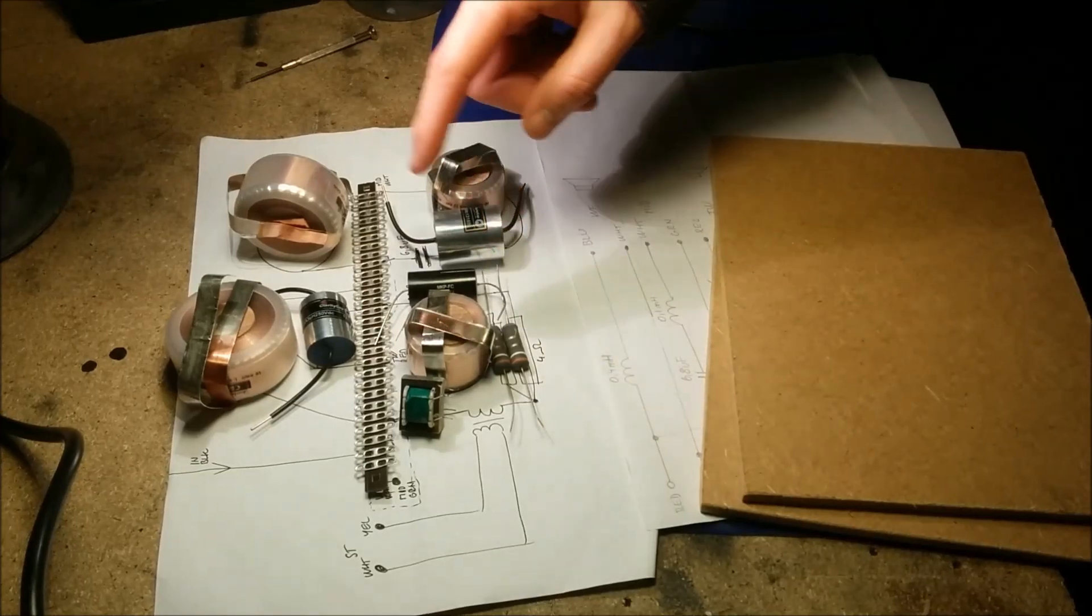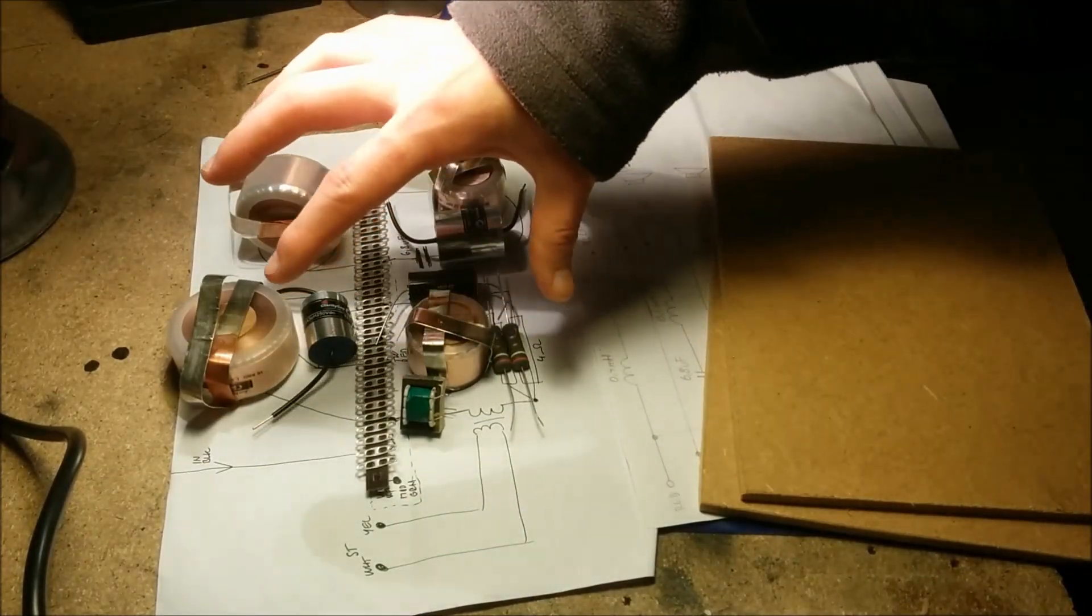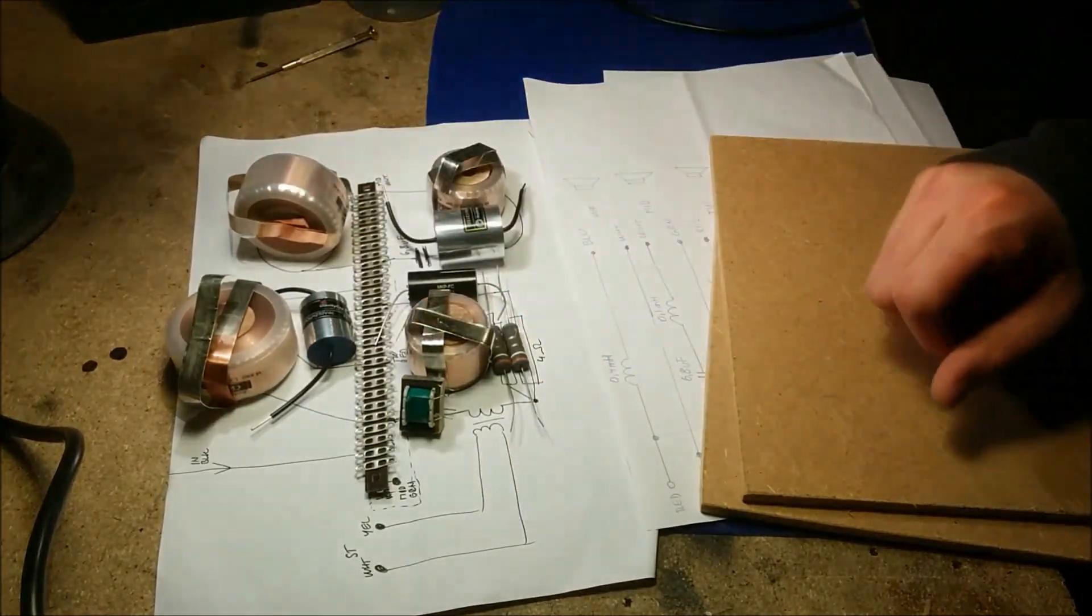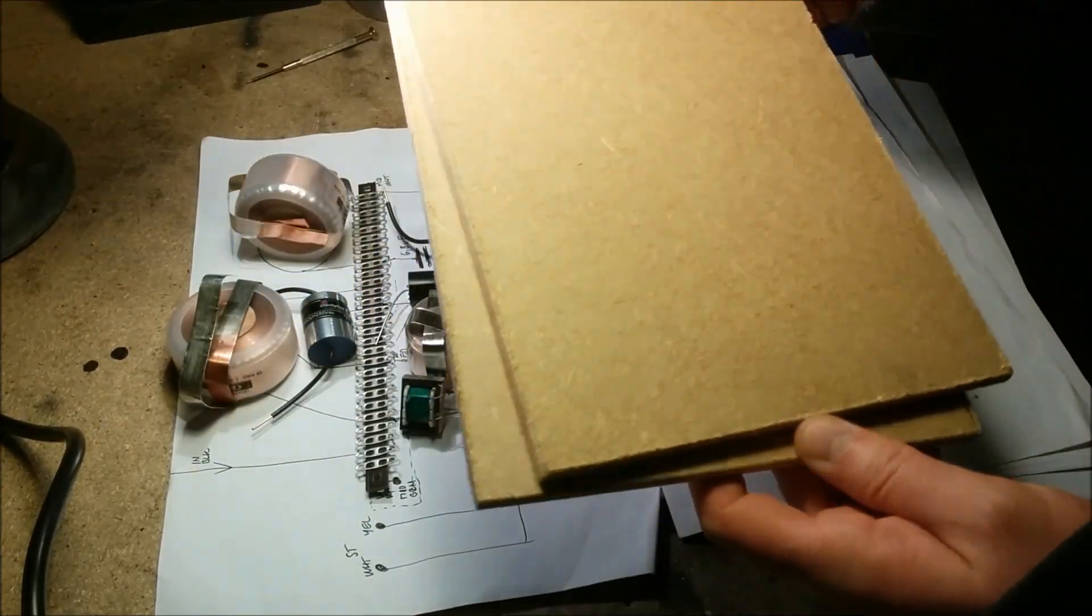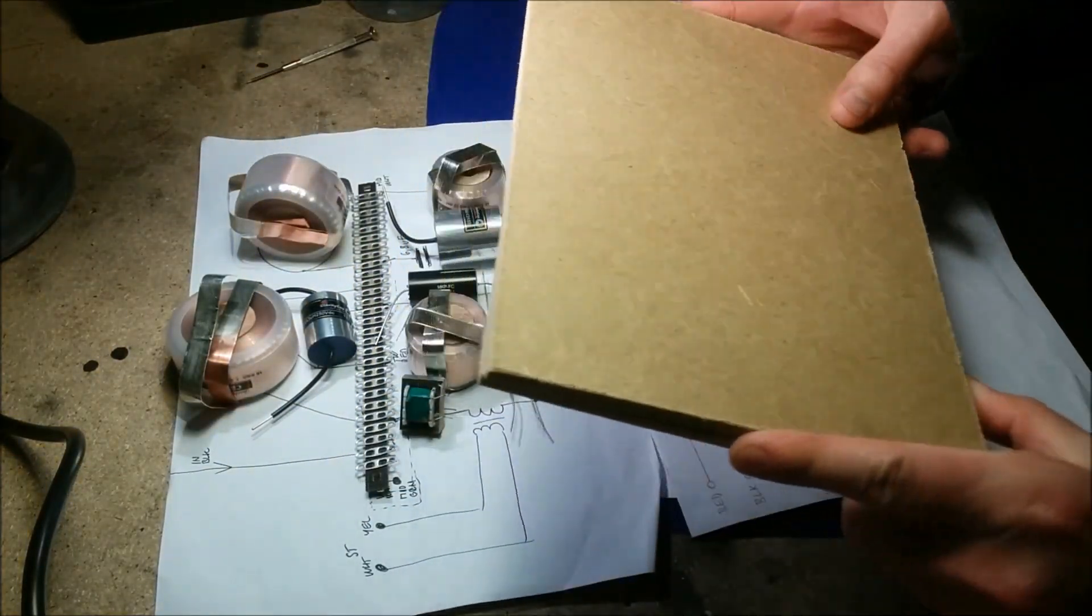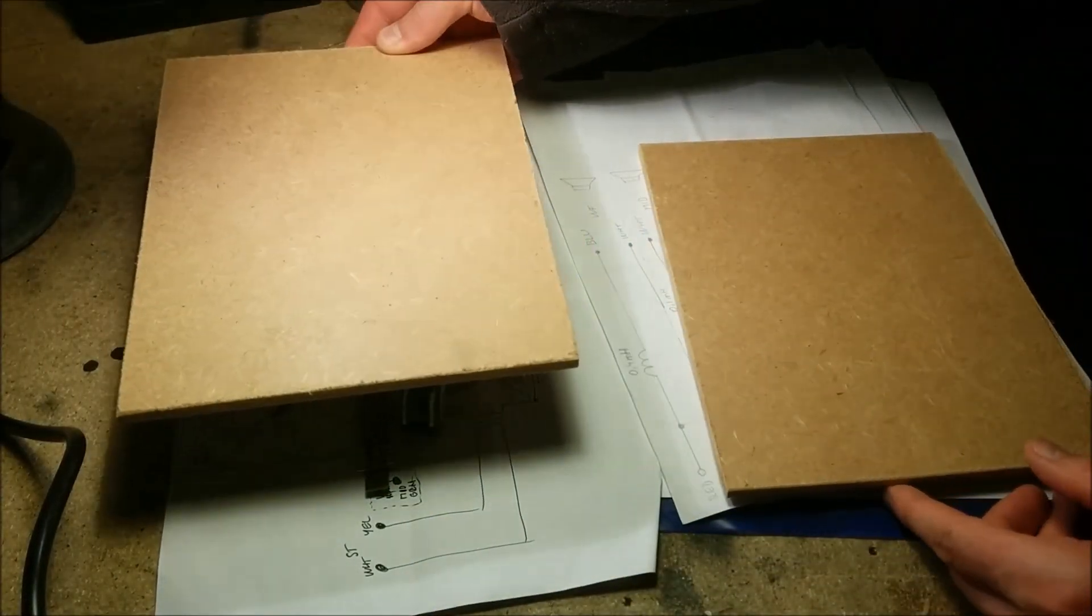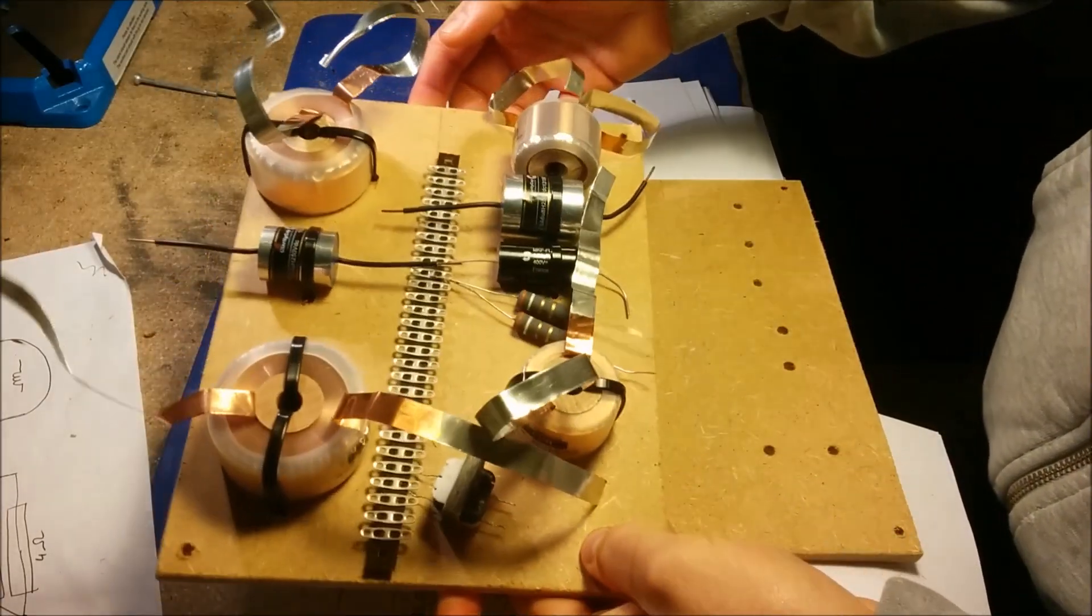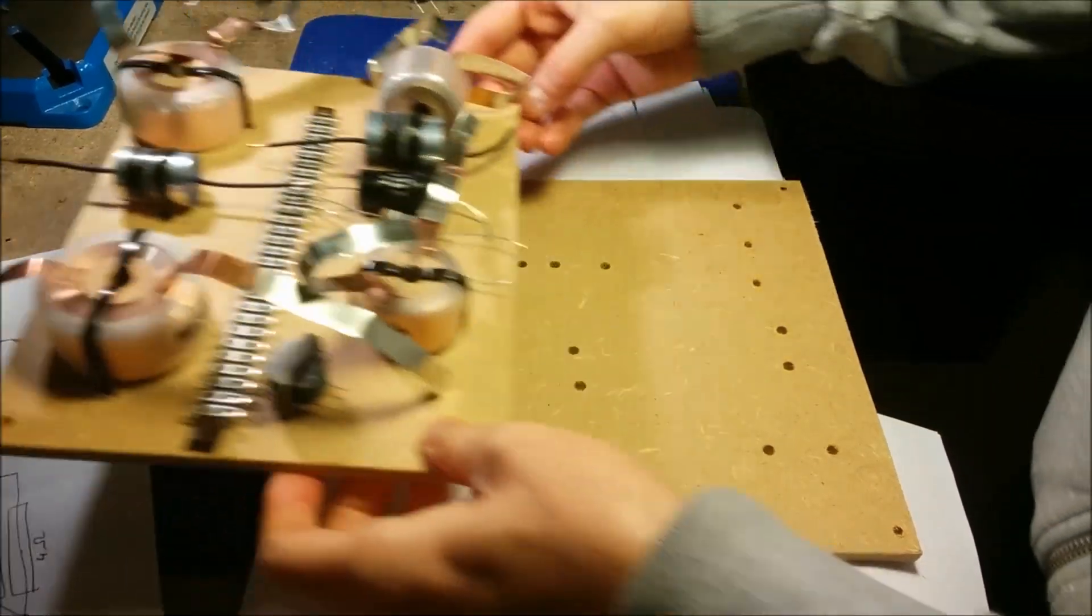Now I positioned the components of the crossover on a piece of paper so I could see how it's going to fit in, and I've got two wooden boards for that. So I'm going to proceed, it's going to be about that size. One of the crossovers is almost done, at least assembled, and now I can assemble the other one.